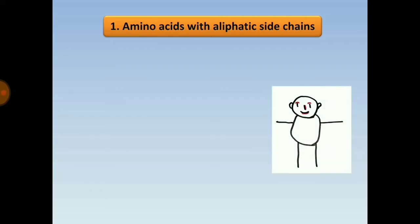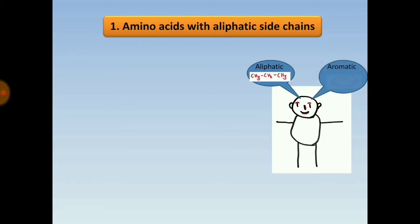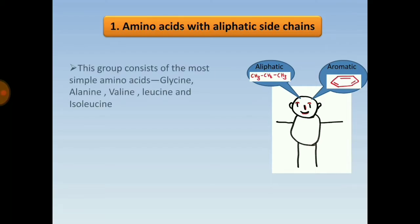Aliphatic refers to open chain structures (e.g., CH3–CH2–CH3), while aromatic refers to cyclic structures such as benzene. The group of aliphatic amino acids consists of the simplest amino acids: glycine, alanine, valine, leucine, and isoleucine.